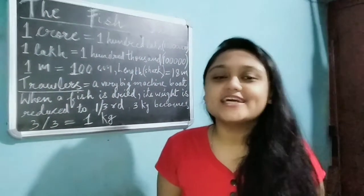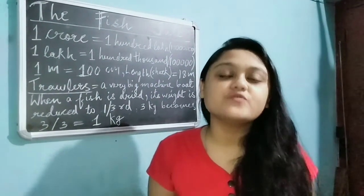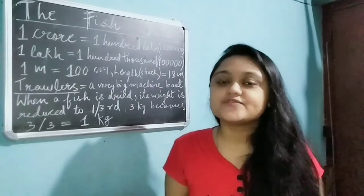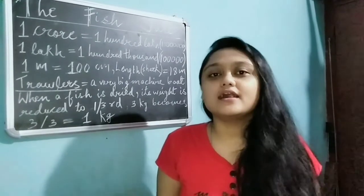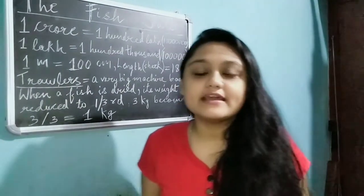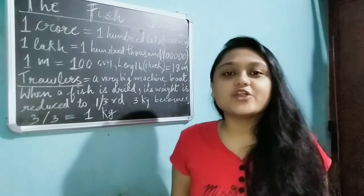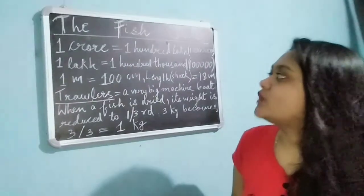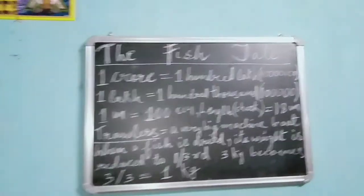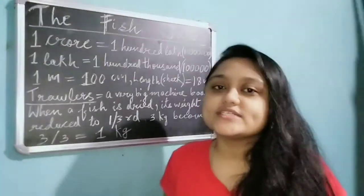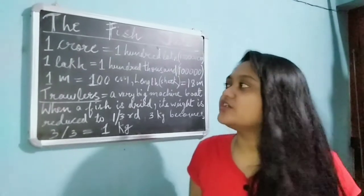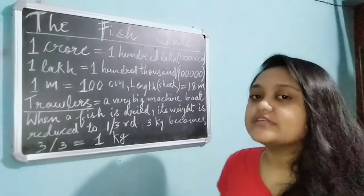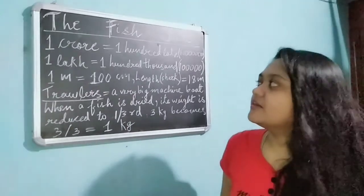Welcome learners, I hope all are doing well. In this video we will discuss a very interesting chapter, that is The Fish Tale of Class 5 Maths. Before I discuss, don't forget to like, share, and subscribe to my channel. First, one crore is equal to 100 lakh, and there are seven zeros in it — this is very important.